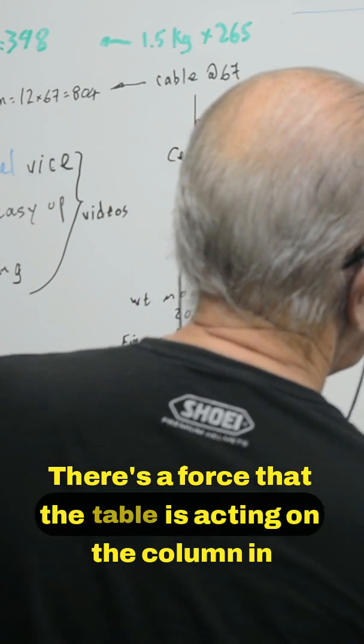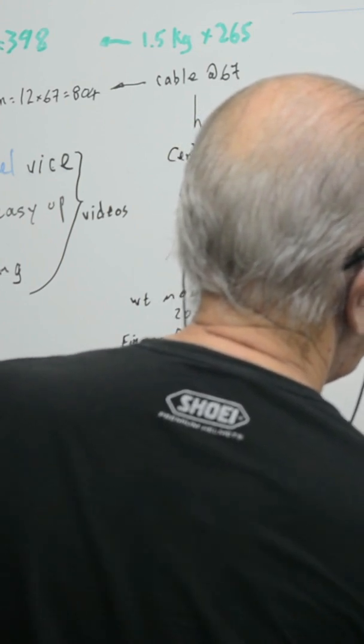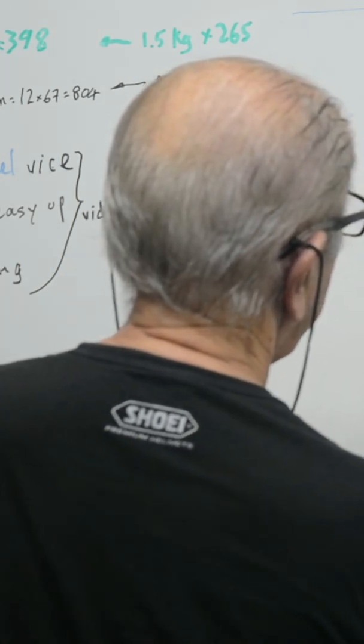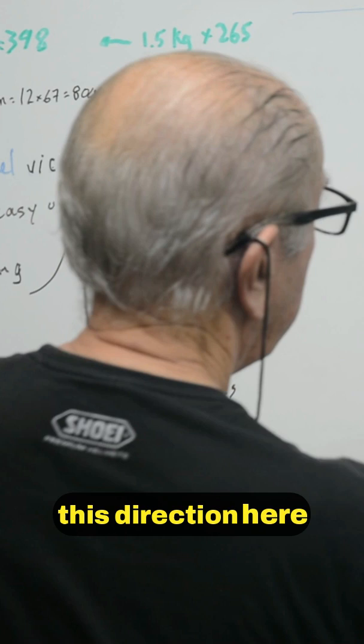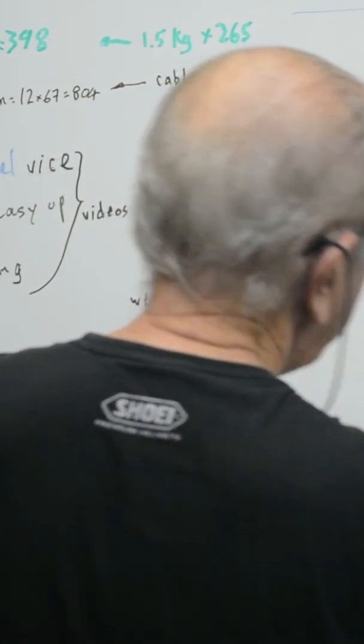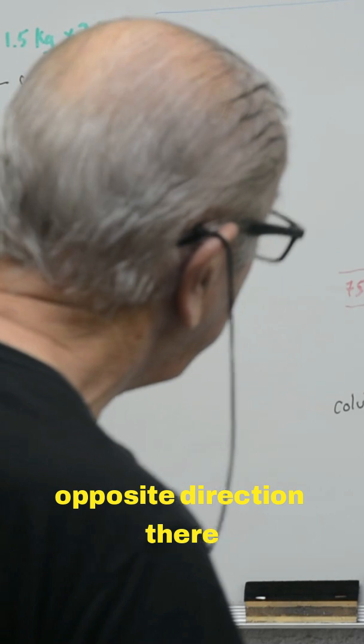There's a force that the table is acting on a column in this direction here and this direction here. You can see you pull down, you're going to push there and push in the opposite direction there.